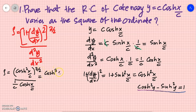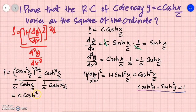This simplifies to cosh³(x/c) divided by (1/c)·cosh(x/c), giving us c·cosh²(x/c).